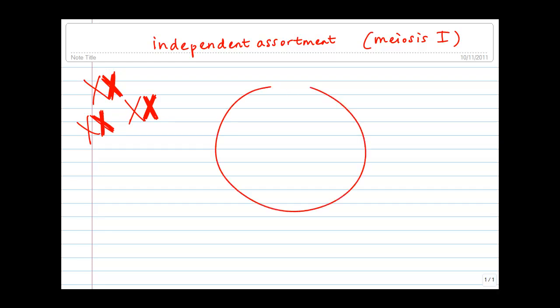So the question becomes, if this is the metaphase plate, how are these pairs of homologous chromosomes going to line up? Because whichever way they line up, that is the way they will move during anaphase I.